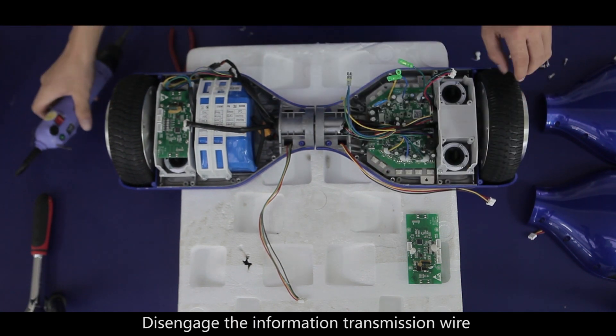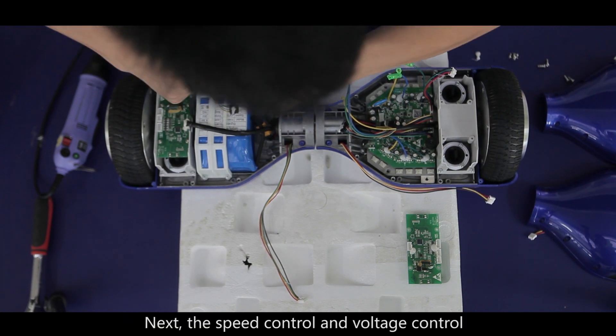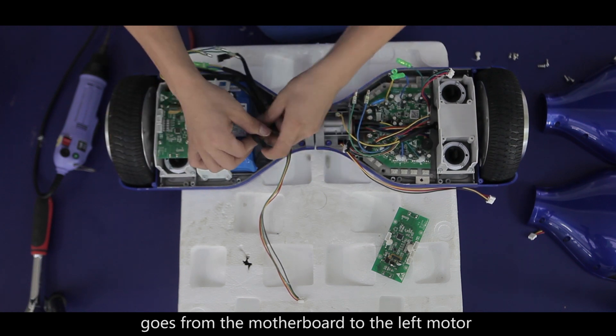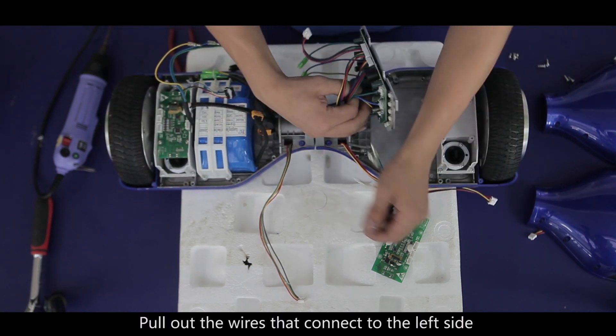Disengage the information transmission wire from the left gyroscope board to the motherboard. Next, the speed control and voltage control goes from the motherboard to the left motor. Pull out the wires that connect to the left side through the tunnel.